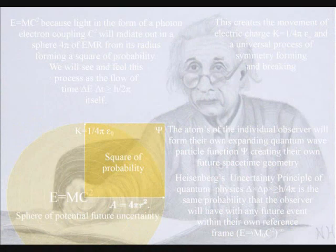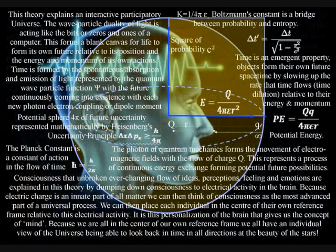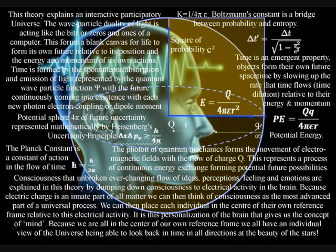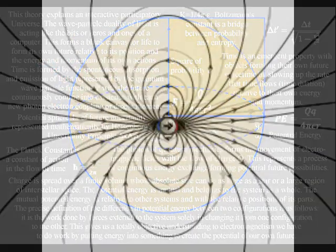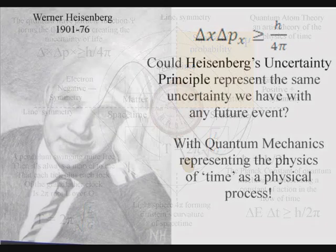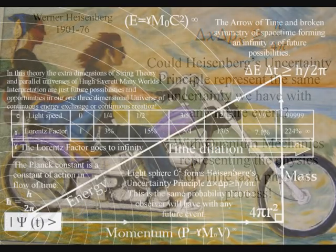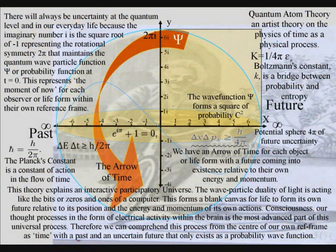This process creates a blank canvas that we can interact with from the centre of our own reference frame, turning the possible into the actual. Conscious thought, the continuous stream of ideas, represents the most advanced part of this universal process, and can therefore comprehend it as a past and uncertain future. The probability can be seen mathematically in quantum mechanics as Heisenberg's uncertainty principle, representing the same uncertainty we have with any future event within our own reference frame.